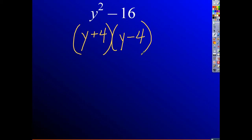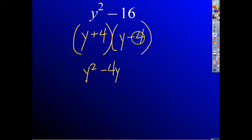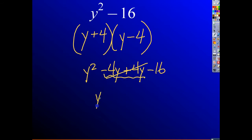So I just factored it. You can go ahead and test that: y times y is y squared, you get negative 4y and positive 4y which cancel out, and 4 times negative 4 gives negative 16. So you end up with y squared minus 16.